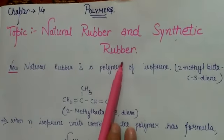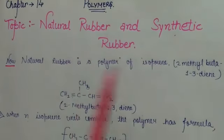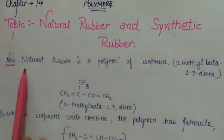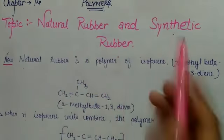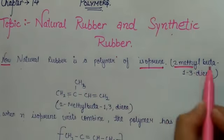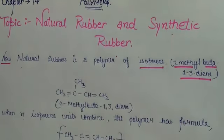Natural rubber and synthetic rubber. First of all, we talk about natural rubber. Natural rubber is a polymer of isoprene, also known as 2-methyl-buta-1,3-diene.